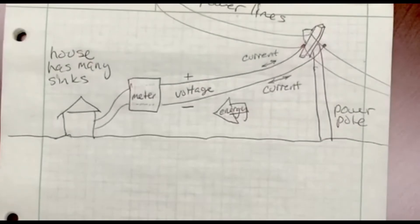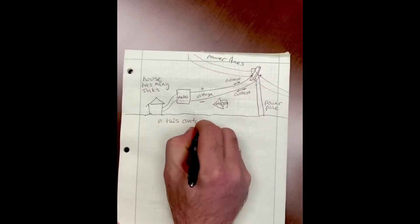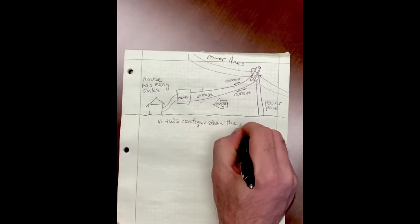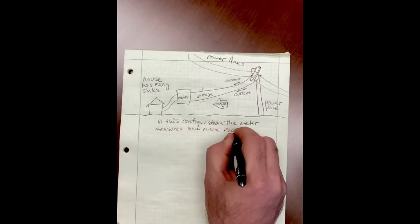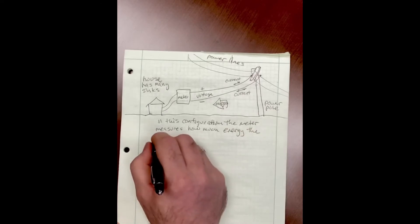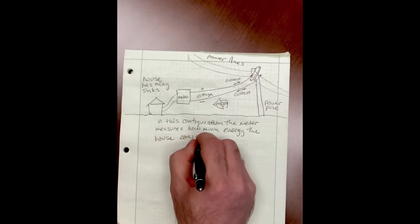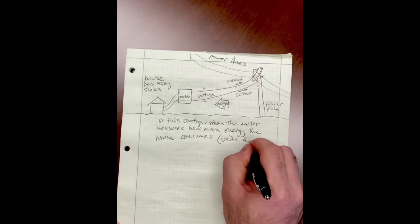If I let those wires touch, I'm going to get a short, I'm going to get a spark, but I keep them separate. In this configuration, the meter is measuring the energy that is flowing from the distribution system to the collection of energy sinks in the house.